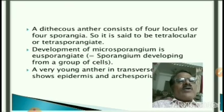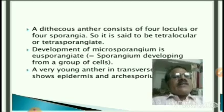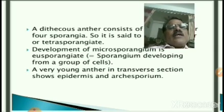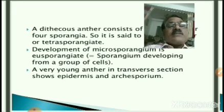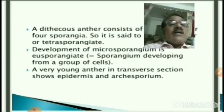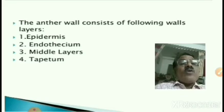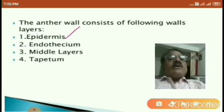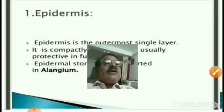The development of microsporangium is eusporangiate. Eusporangium develops from a group of cells. A very young anther in transverse section shows epidermis and archesporium. The TS of the matured anther shows epidermis and archesporium. The anther wall consists of the following wall layers: epidermis, endothecium, middle layers, and tapetum. Let us see each of these layers one by one.